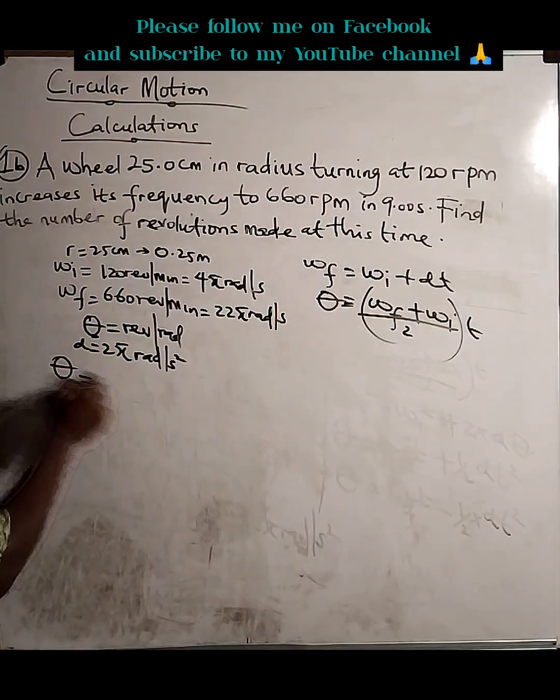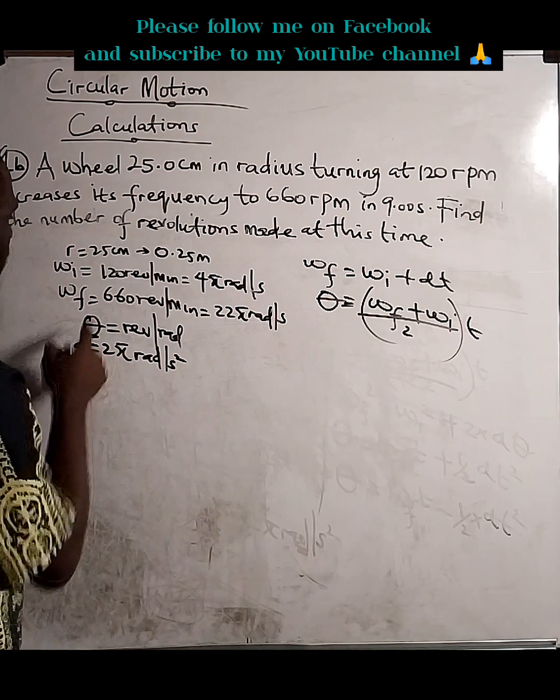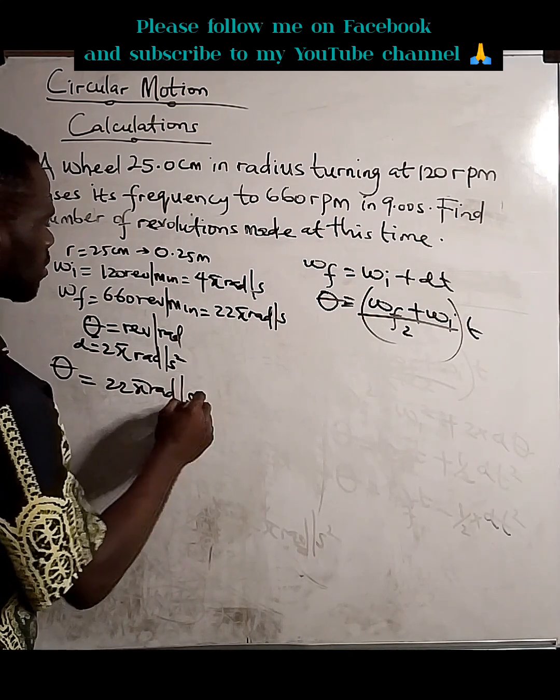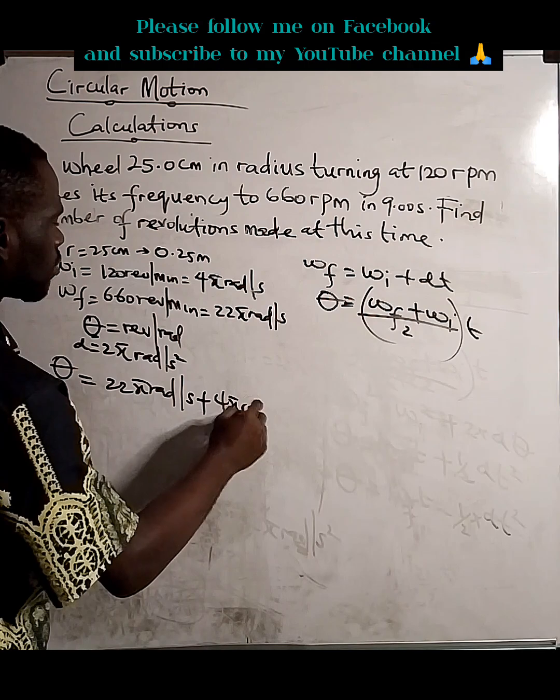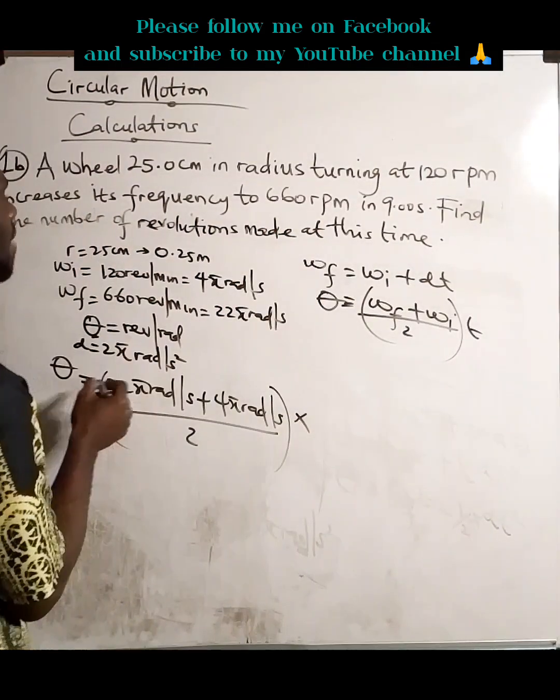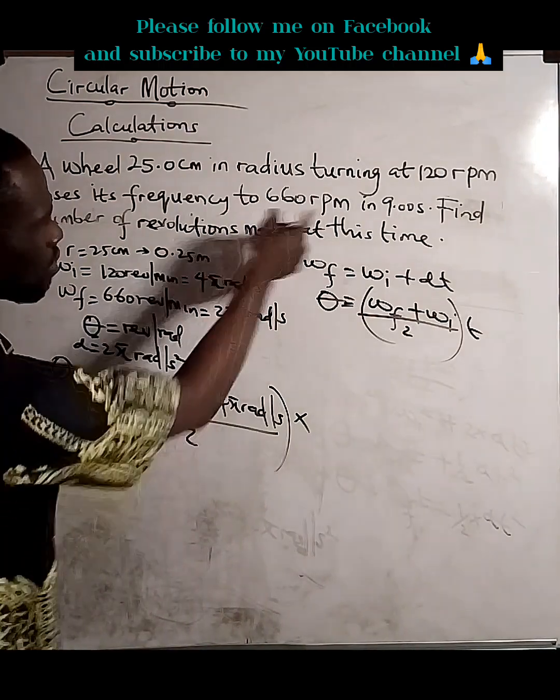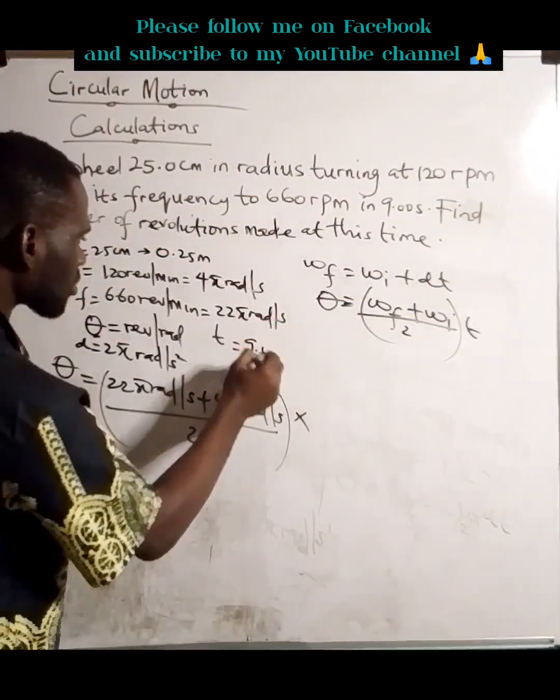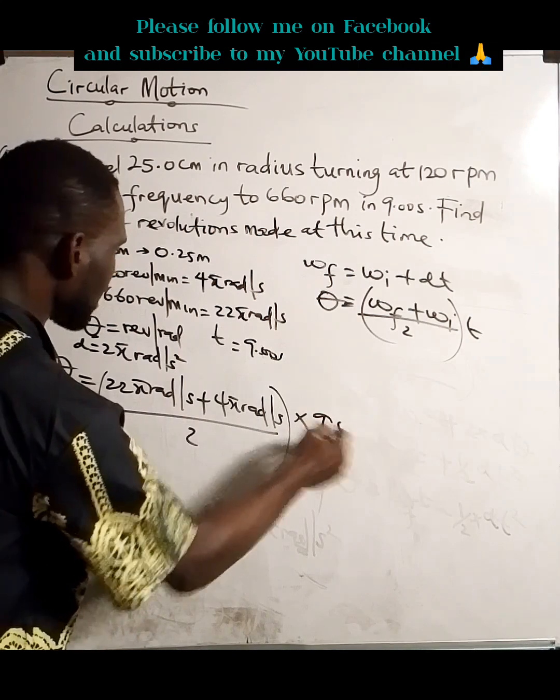So, what's that going to be? This equals the final speed, 22 pi rad per second, plus 4 pi rad per second, divided by 2 times time. What's the time? The time is 9 seconds.